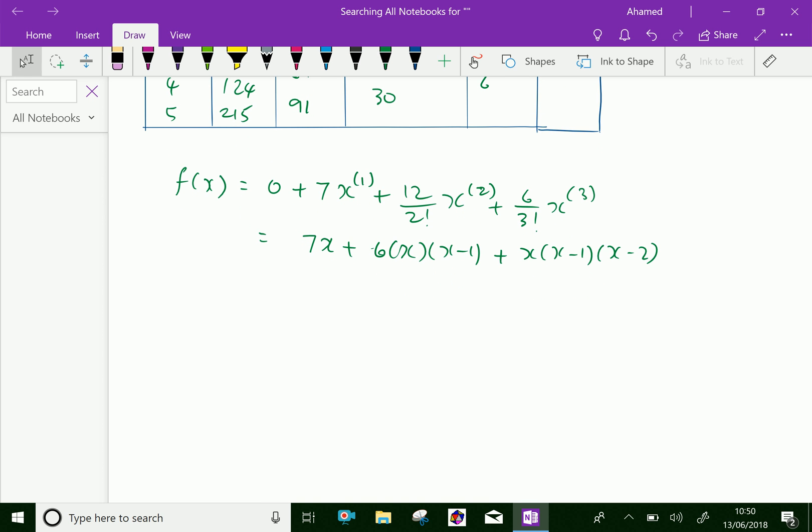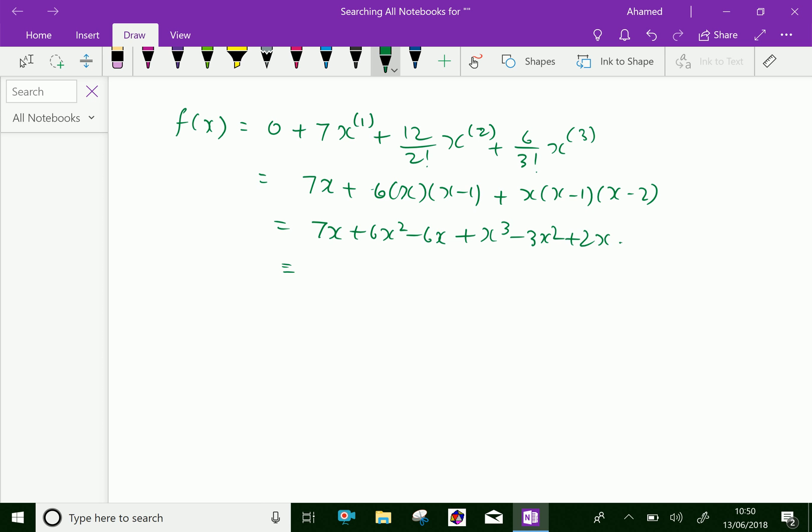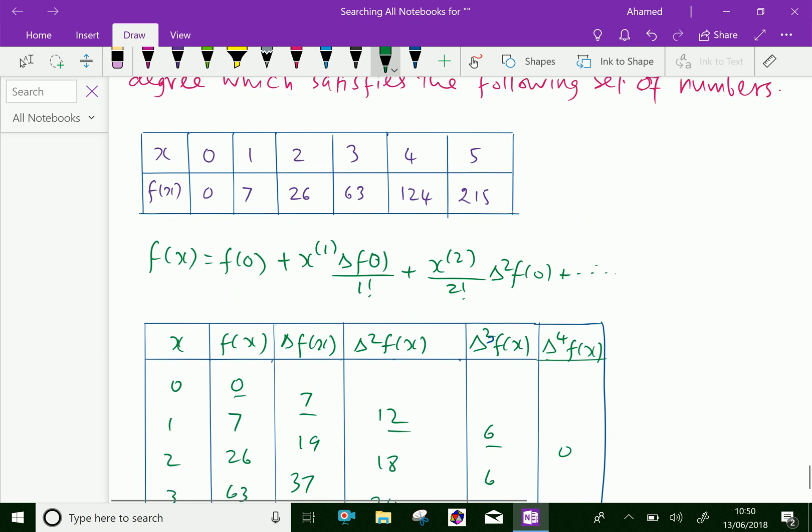After simplifying, we will get 7x plus 6x square minus 6x plus x cube minus 3x square plus 2x. We will write further simplifying manner. It is x cube plus 3x square plus 3x. This is our polynomial of the lowest degree which satisfy the given values of x and f of x.